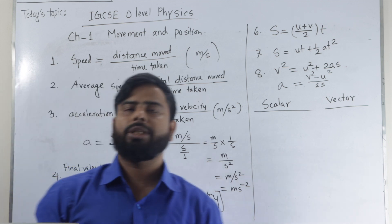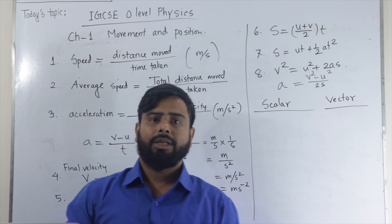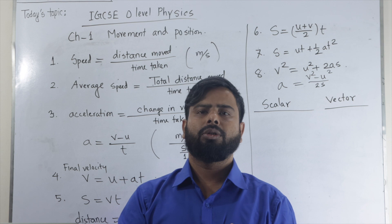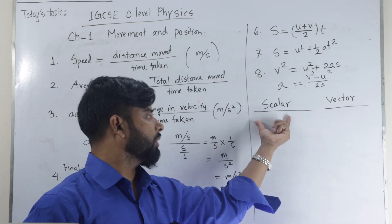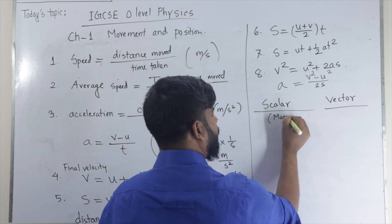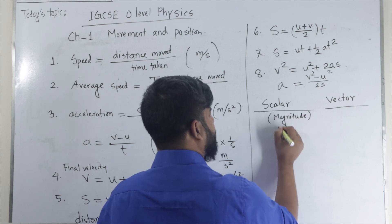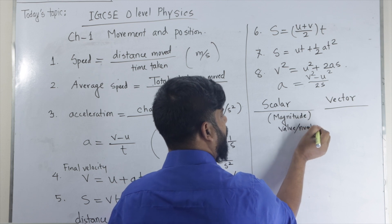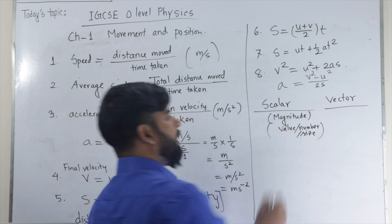Another important topic for this chapter: scalar quantity and vector quantity. The physical quantity which has only magnitude is called a scalar quantity — it has no direction. Scalar quantity has only magnitude. Magnitude means value, number, or size.